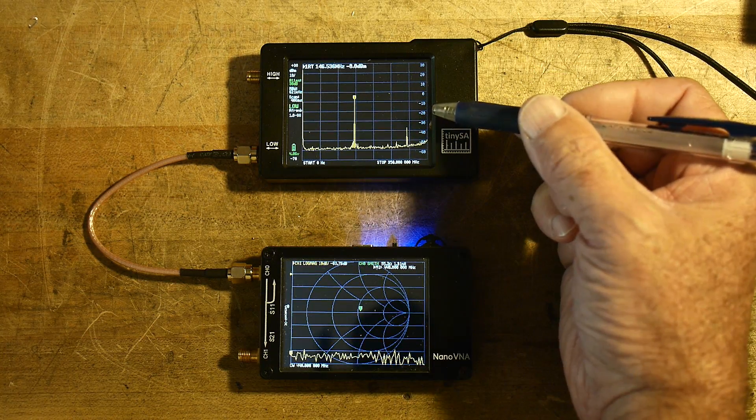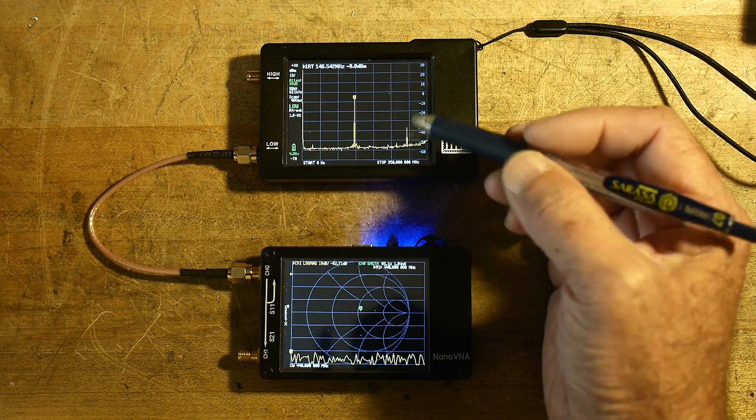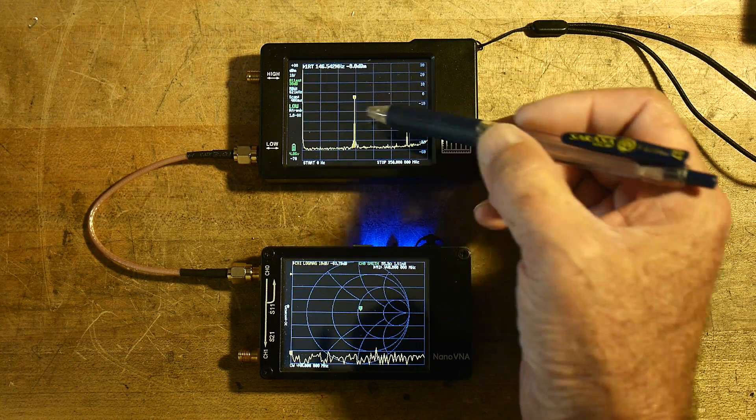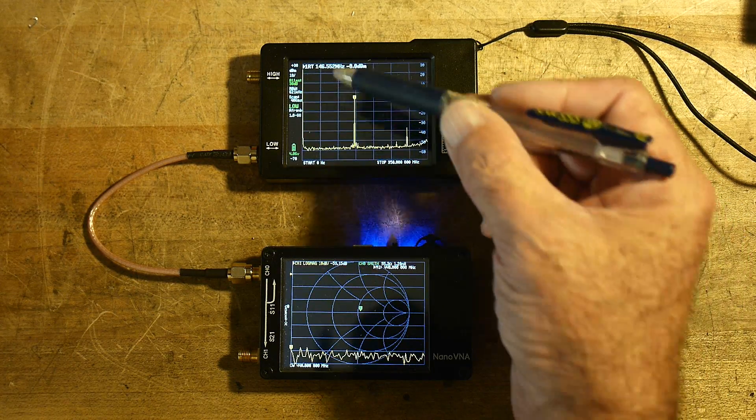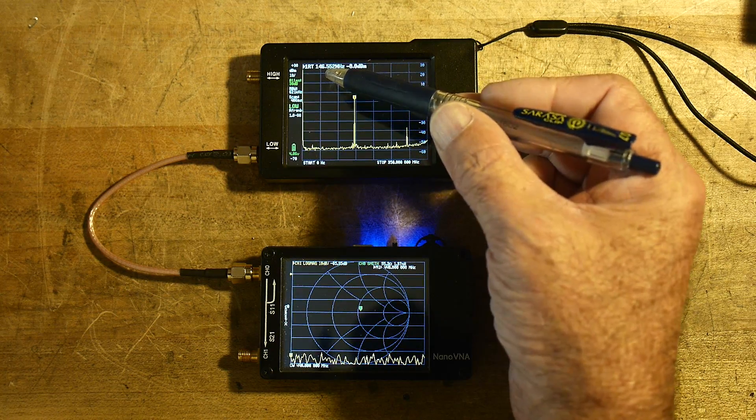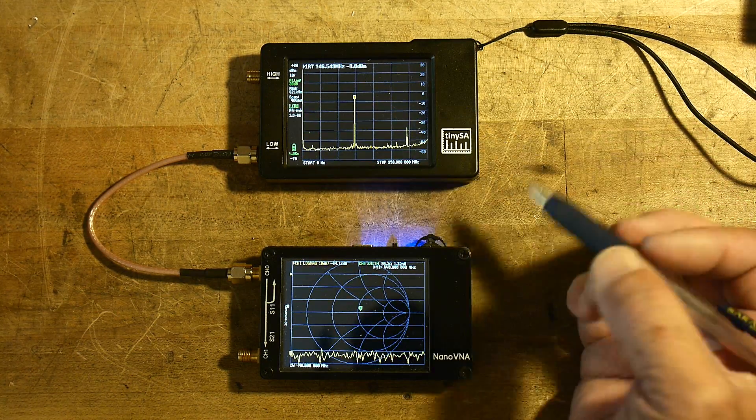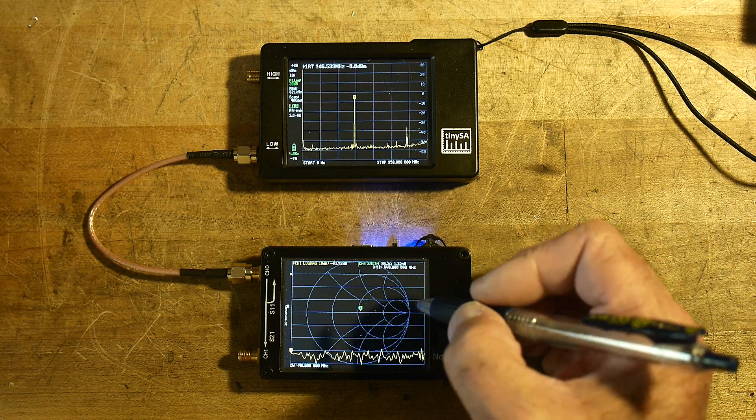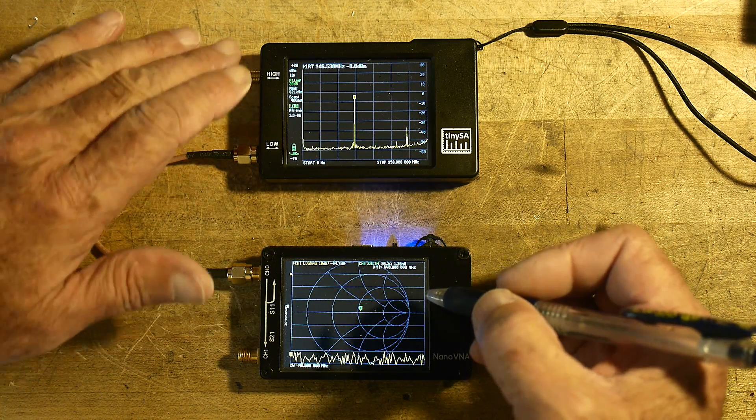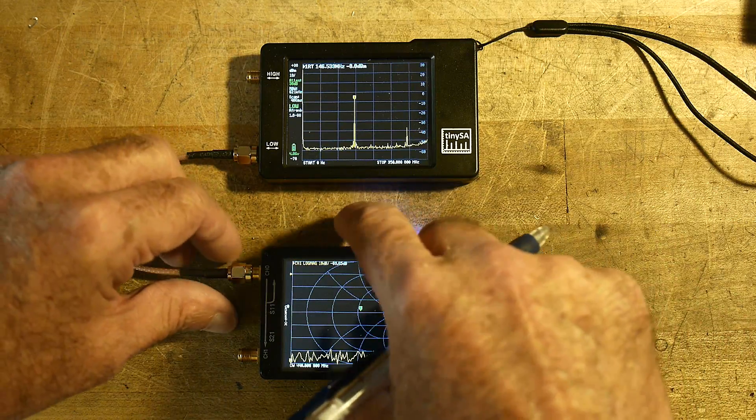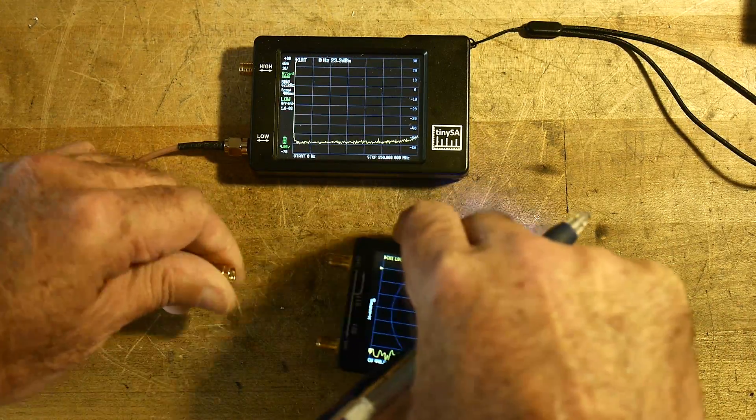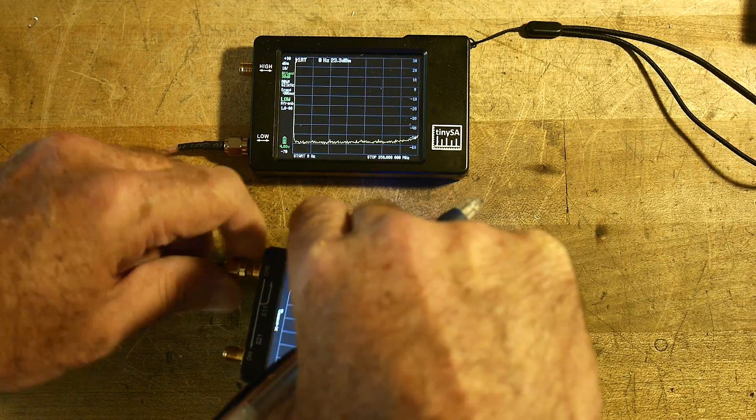So we're getting subharmonics. This is measuring 146.52. That's interesting—it's not a simplex frequency. Hmm, that's kind of weird. Maybe somebody's transmitting nearby, I don't know. Let me disconnect the cable. No, it's this thing's outputting it. It's kind of weird.